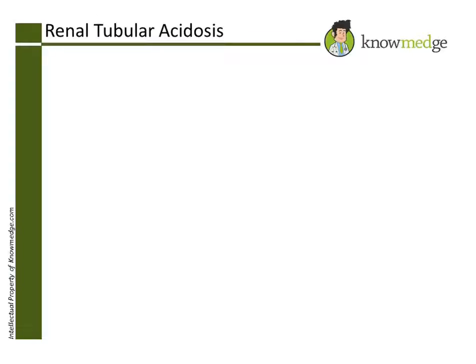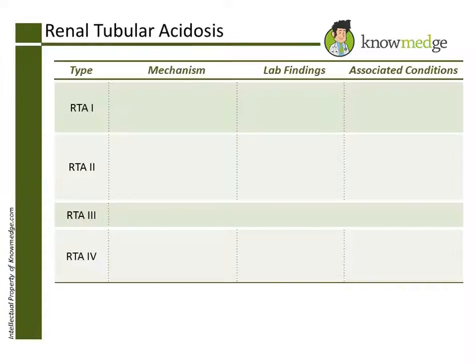Renal tubular acidosis is classified into four types. The numbering can be confusing, but if we focus on the basics, we can remember the concepts most frequently tested on the board exam.